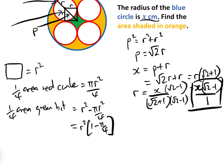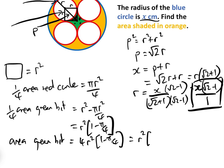But there are four green bits — one here, another here, another here, and another here. So the area of all the green bits equals four times that, which equals r squared(4 minus pi). And since r = x(root 2 − 1), the area of the green bit equals x squared times (root 2 − 1) squared times (4 minus pi).